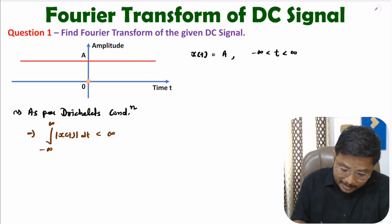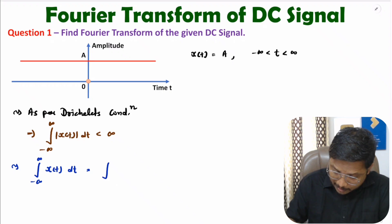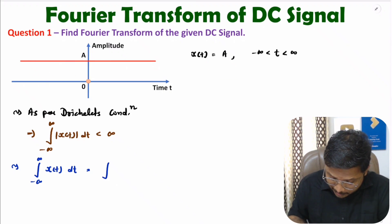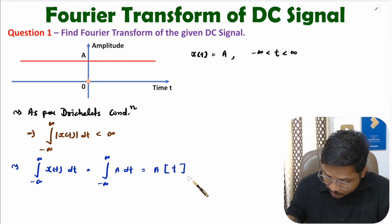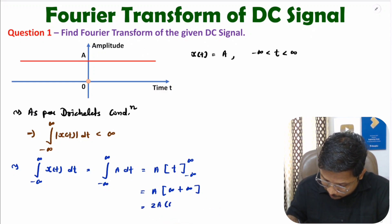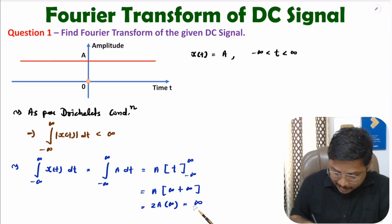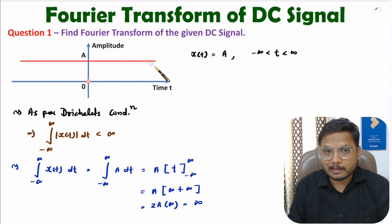So if you identify the integration of this signal, I will be integrating this signal over the limit of minus infinity to plus infinity. Here A is constant, so integration of one is small t, which has the limit from minus infinity to plus infinity. So T is infinity minus minus infinity, which is plus infinity. So 2A into infinity means it is infinity. As this signal's integration is infinite, you cannot identify the Fourier transform of this DC signal.